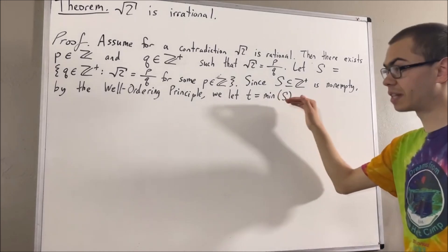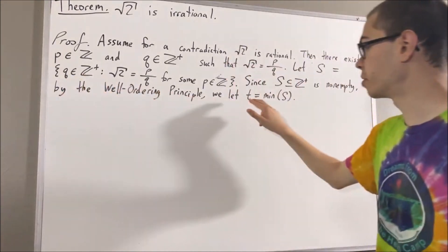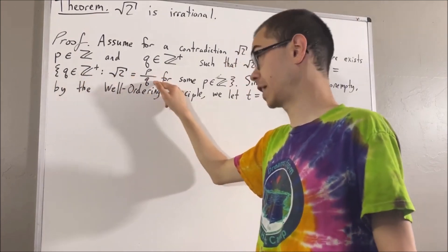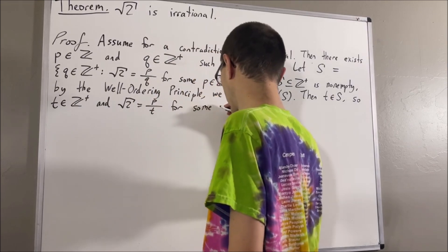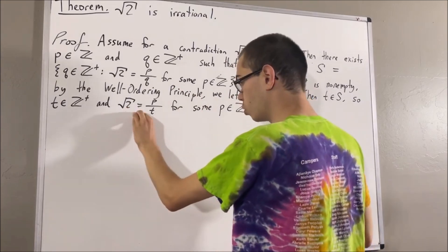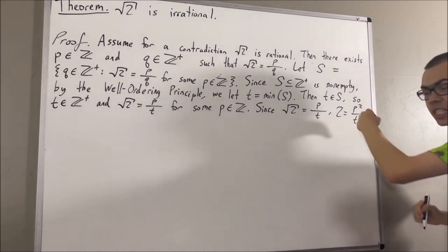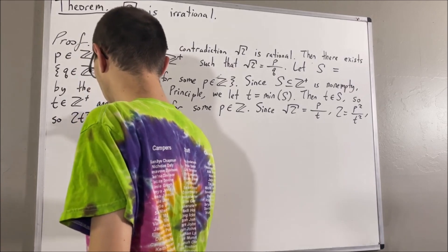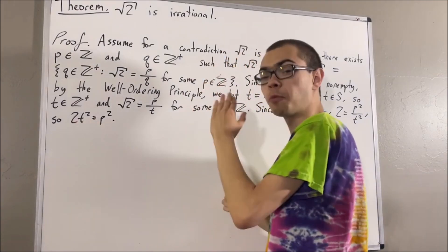Since t is the smallest element of S, t is an element of S, which means if we take q to be t, we have that t is a positive integer and the square root of two is equal to p over t for some integer p. Let's take this equation and square both sides. If we do that, we get two equals p squared over t squared. And then we can multiply t squared on both sides, and we get two t squared equals p squared. Now we see that p squared is equal to two times an integer, and that's what it means for p squared to be even.